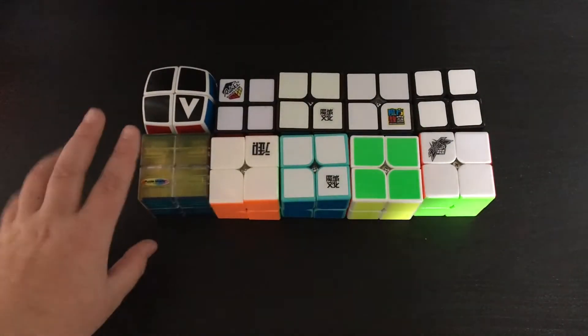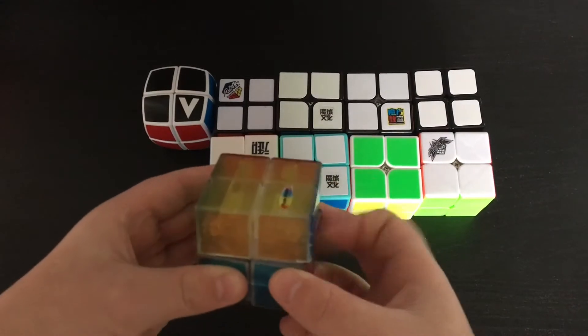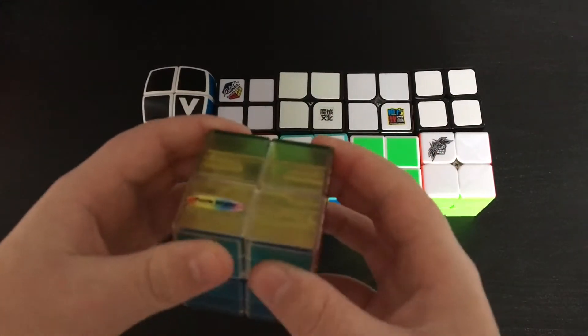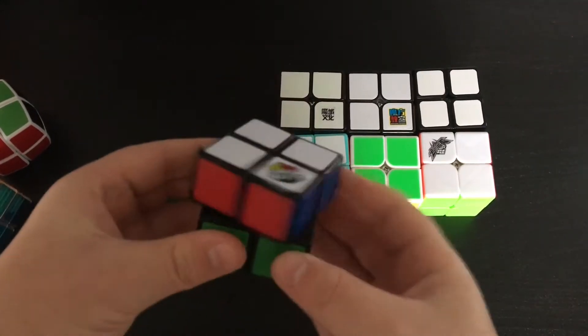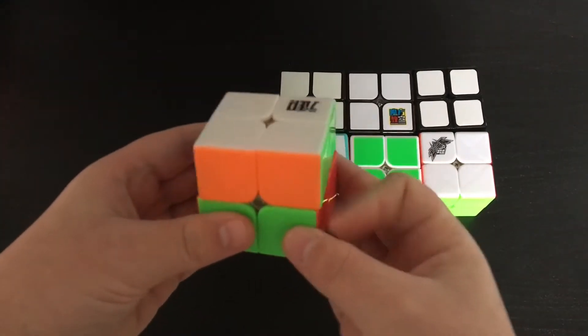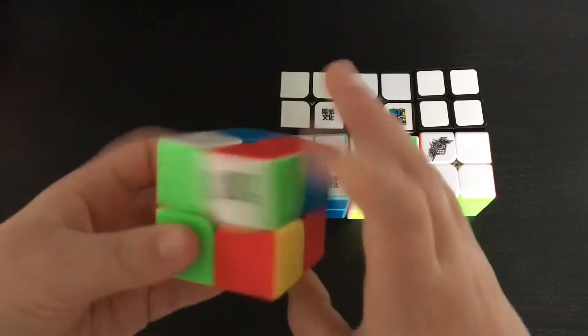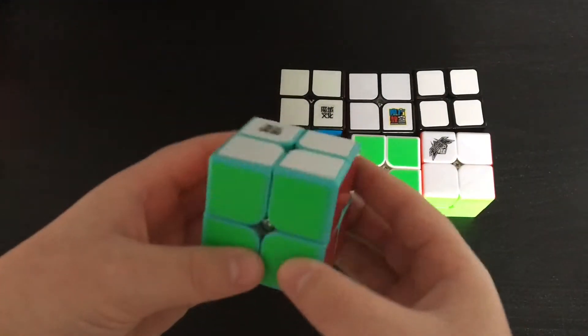For 2x2 I have quite a few. I have a Puzzle Master 2x2 with clear transparent plastic, a VQ2, a Rubik's brand 2x2 which was my first 2x2, a Kung Fu Yuehun which is my backup main, and a Moji Weipo.